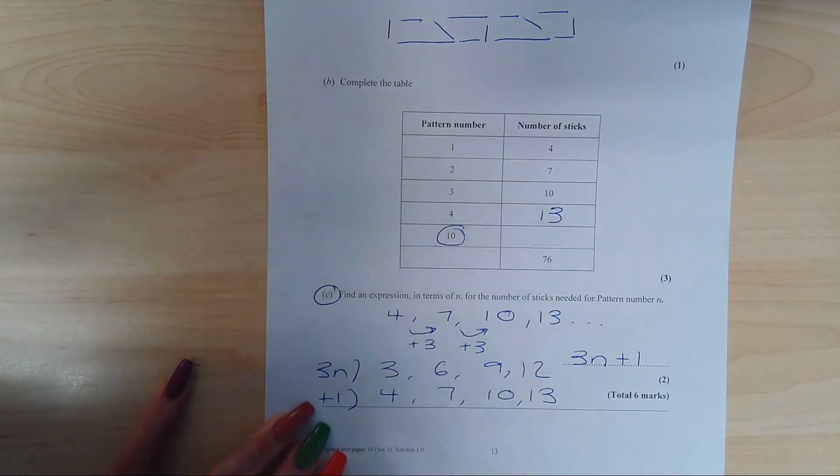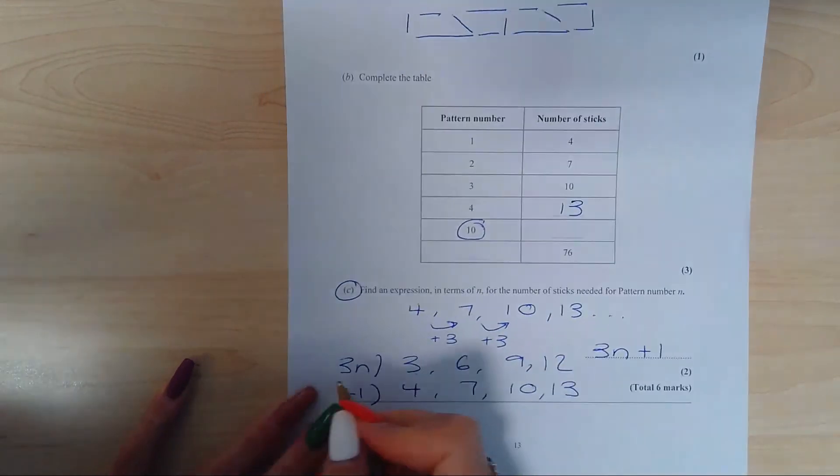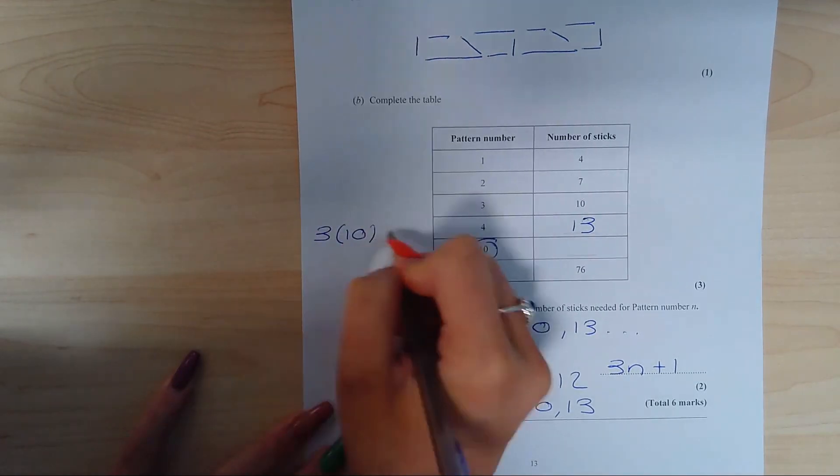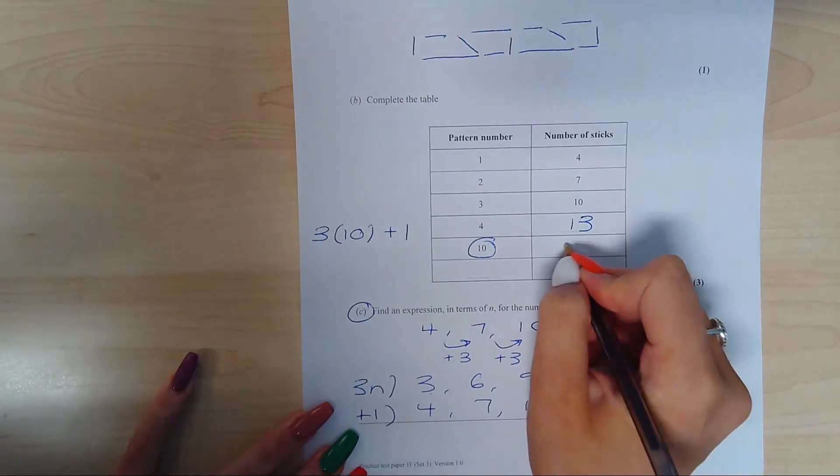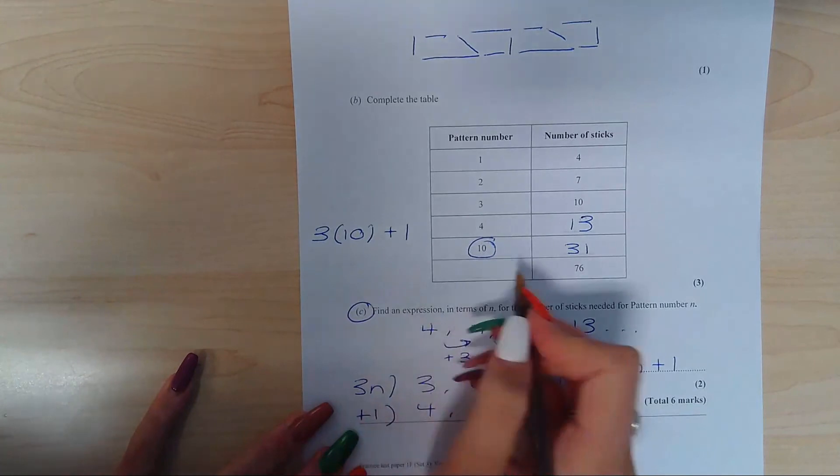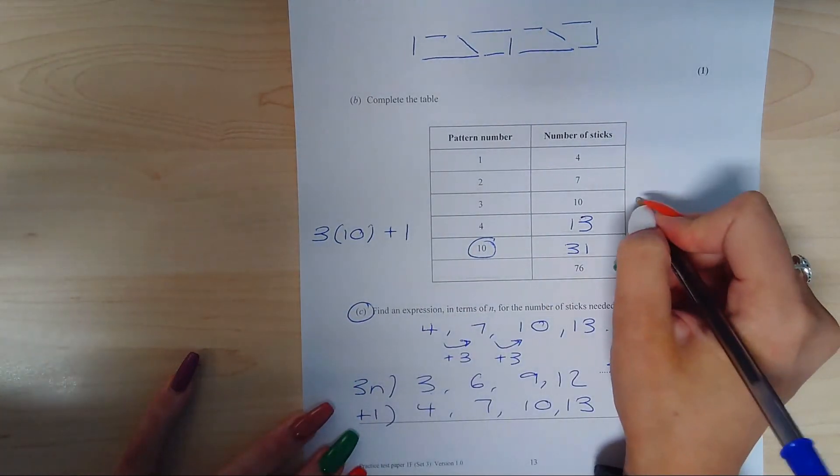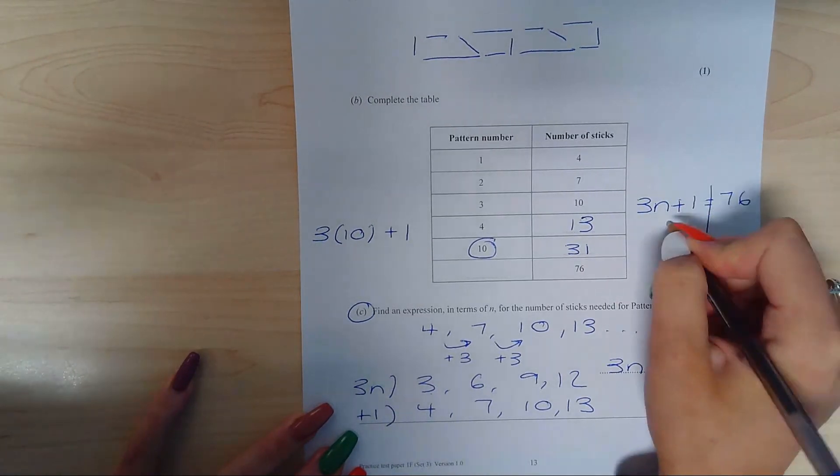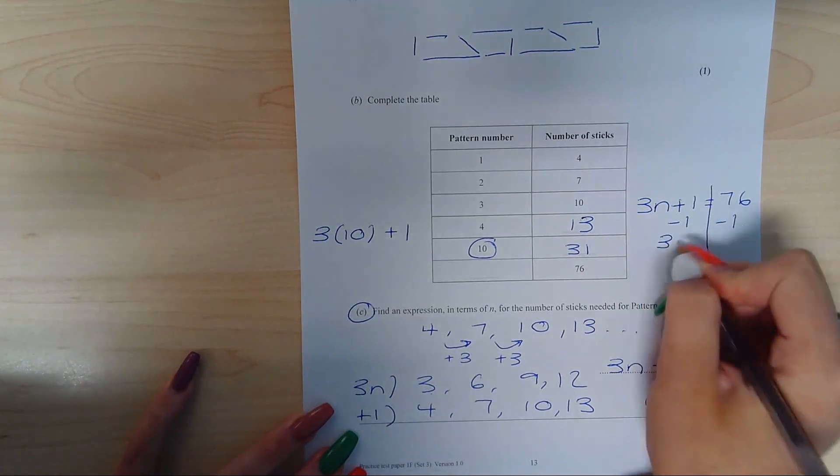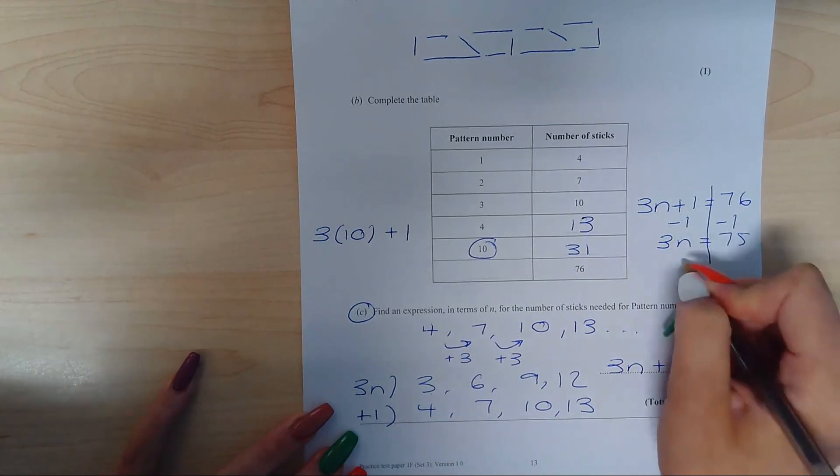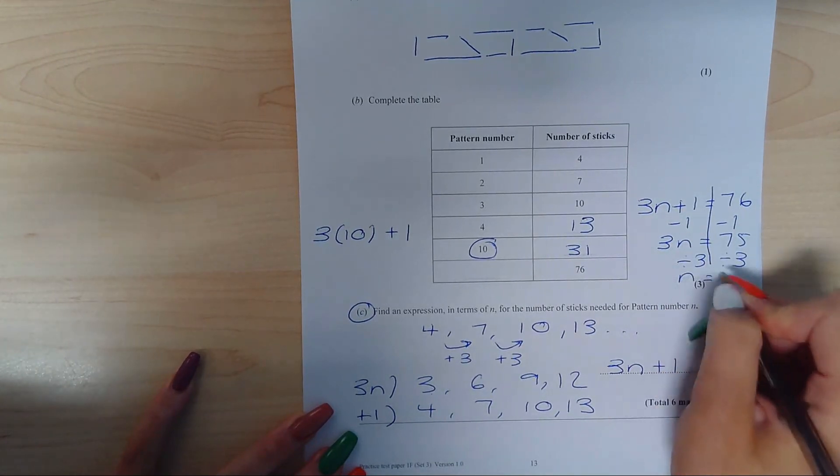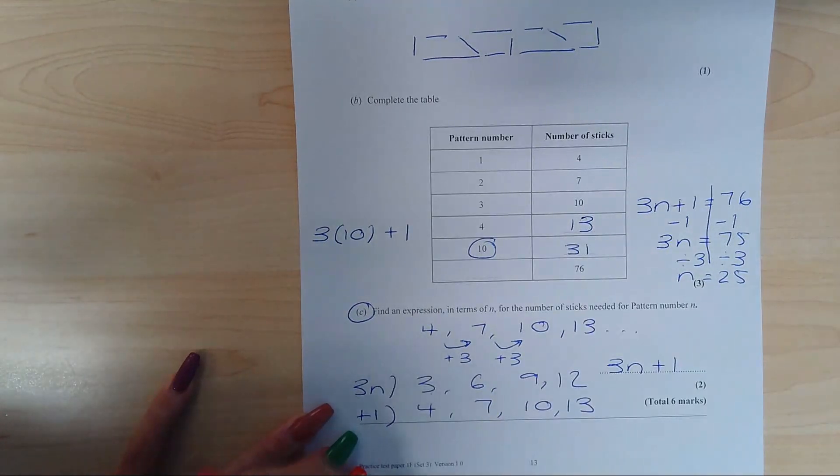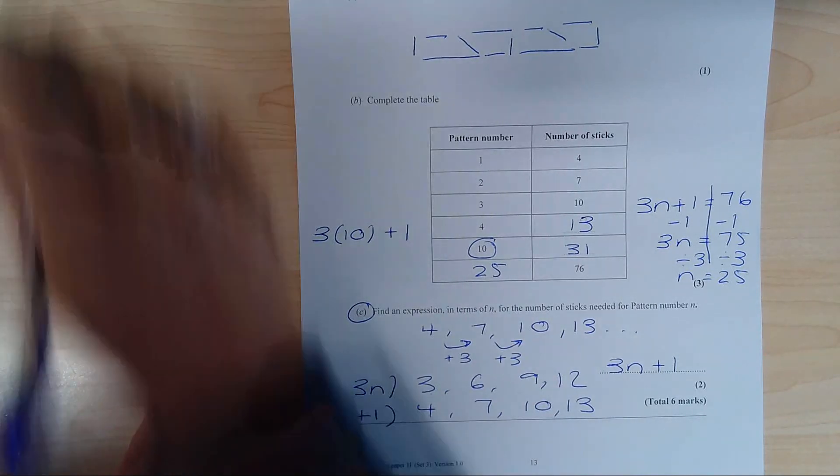In order to work out pattern number 10 then, you are going to substitute that value into this expression, and you end up with 31. In order to work out the pattern number, you need to do this in reverse and make your nth term equal to 76, and solve for n. So therefore n is equal to 25. So in order to get 76, that is the 25th number in the pattern.